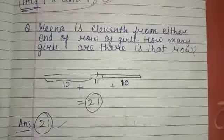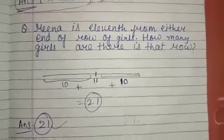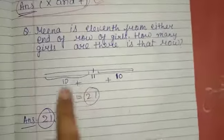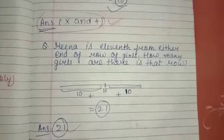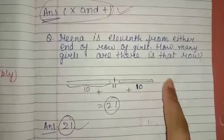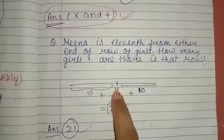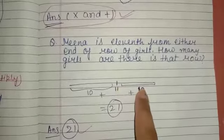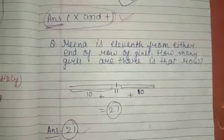Next question: Mina is 11th from either end of a row of girls. How many girls are in the row? Draw a row — Mina is 11th from one end, meaning 10 girls are ahead of her. From the other end she's also 11th, meaning 10 girls are behind her. So total = 10 + 1 + 10 = 21 girls.